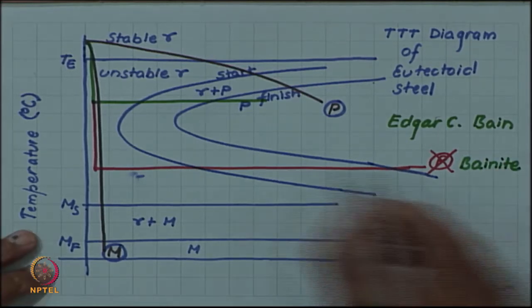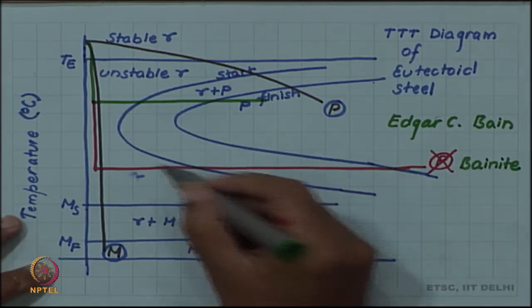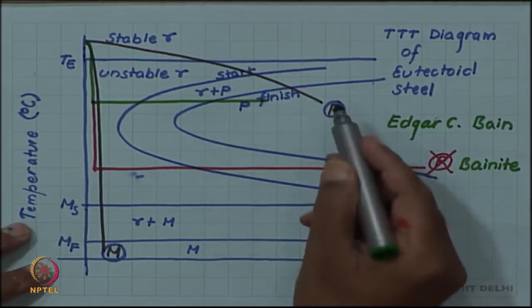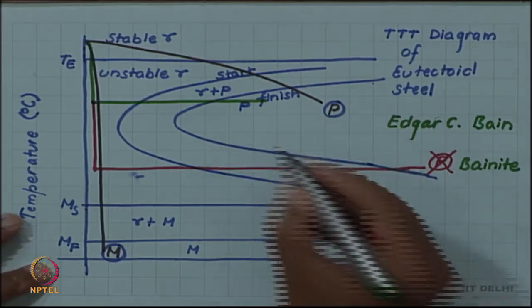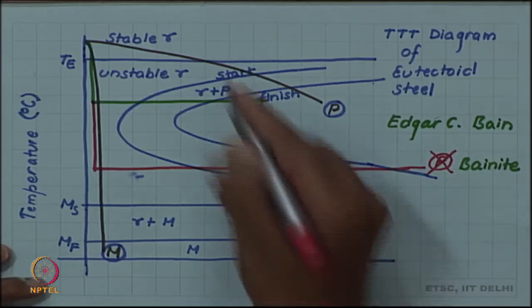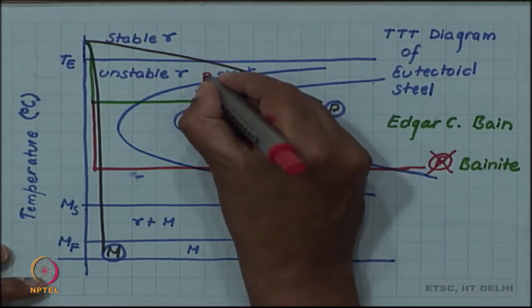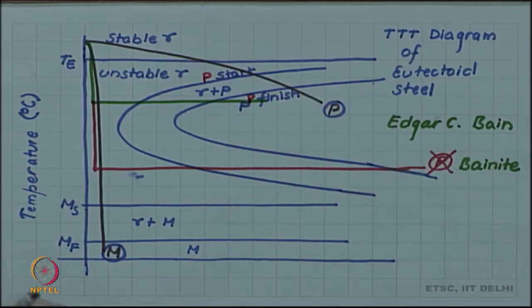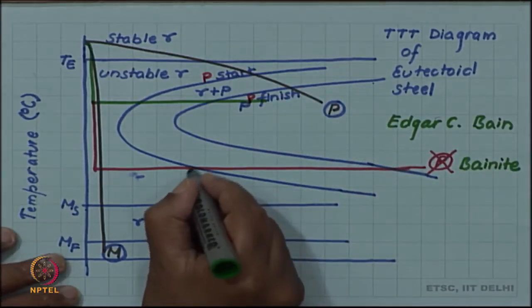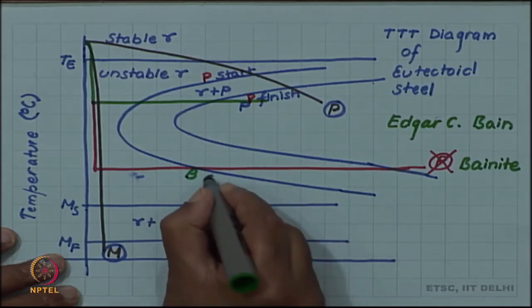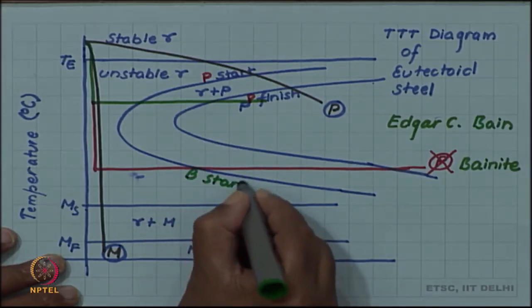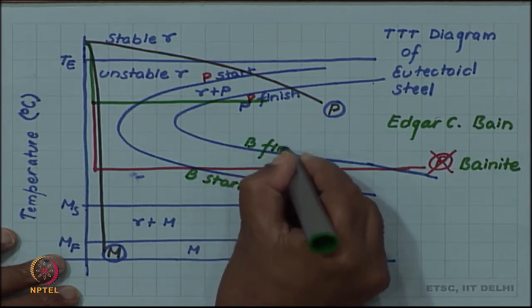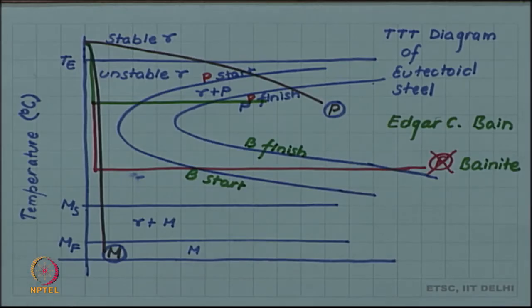The start curve and finish curve below the nose are bainite start and bainite finish, instead of pearlite start and pearlite finish. So we can now label these start curves: the upper ones as pearlite start and pearlite finish, whereas the lower ones are bainite start and bainite finish.